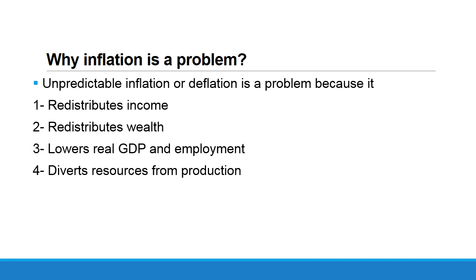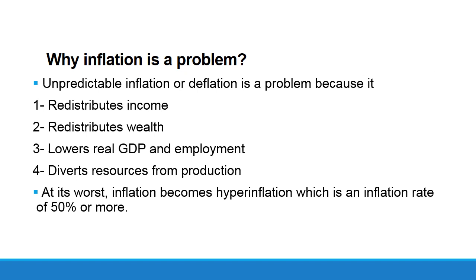Number four: inflation diverts resources from production. We can expect producers diverting their efforts and time not toward production but toward estimating inflation. For example, imagine a doctor spending more and more time trying to estimate the inflation rate and how to deal with it. When inflation becomes hyperinflation — meaning a very high inflation rate of 50 percent or more — money will lose its value rapidly.